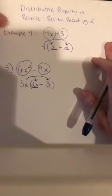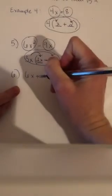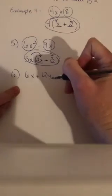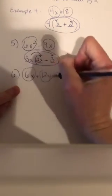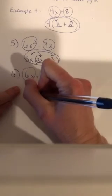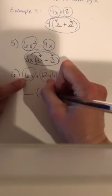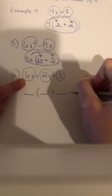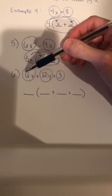We have enough time for another example. Let's do example 6 — and you should be circling your results. Number 6: 6x plus 12y plus 3. Let's look at each of these terms. You're going to have something you multiply all of the terms by, and this time we've got three terms, so you're going to have a term here, here, and here.